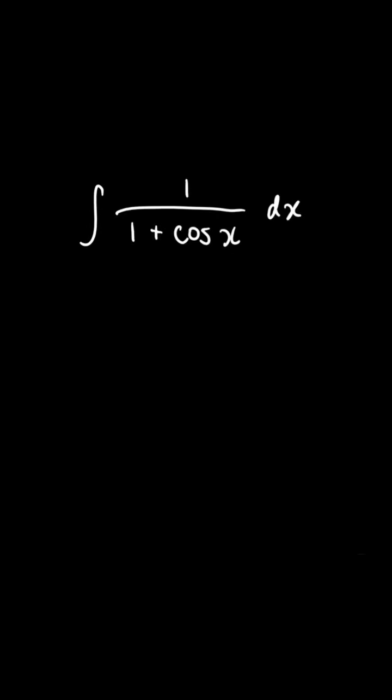Can you solve this A-level integral? First, what we're going to need to do is multiply both the numerator and the denominator by 1 minus cos x. You'll see why later.